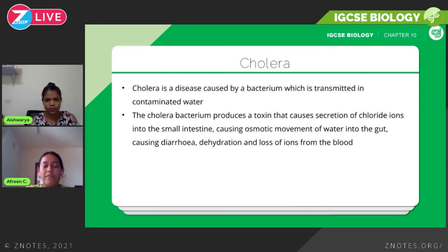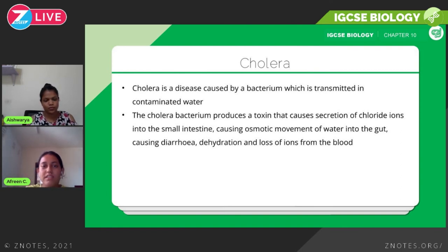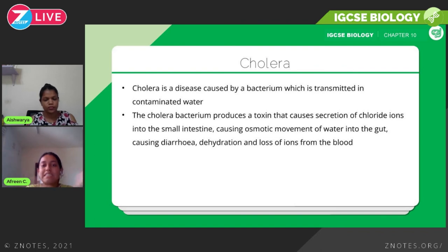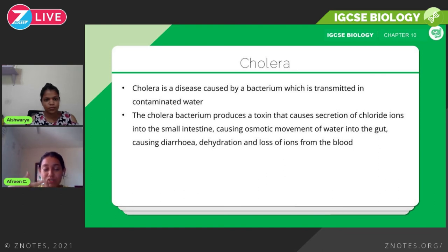As a result of the diarrhea, the person suffers dehydration and loss of ions from the blood. Treatment involves oral rehydration with saline solution — a mixture of water, salt, and sugar. If left untreated, cholera can lead to death. It's a three-step process: the toxin causes chloride ion secretion into the small intestine → water moves into the small intestine → diarrhea results.